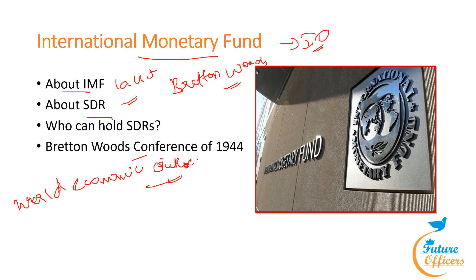Special Drawing Rights (SDR) is an international reserve asset created by the IMF. The main purpose of SDR is to supplement member countries' official reserves. When created, the IMF defined it as equivalent to a fractional amount of gold equivalent to the US dollar. SDR is not a currency; it is a potential claim on the freely usable currencies of IMF members, providing countries with liquidity when needed. It consists of a basket of currencies: US dollar, euro, Chinese yuan, Japanese yen, and British pound.